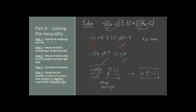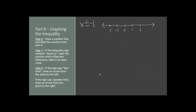So our solution to the inequality is x is less than or equal to negative 1. This means that any number that is less than or equal to negative 1 is a correct answer. Now, this may be kind of difficult to show, so let's try to graph this on a number line. We're going to begin by drawing a number line and label the number that we ended up with on the line. We ended up with negative 1, so I'll put a little mark right there on negative 1.